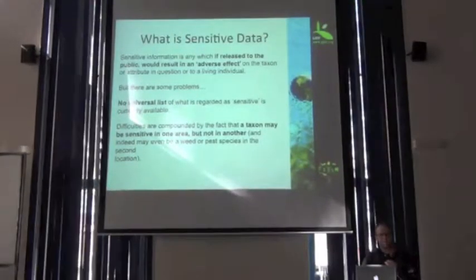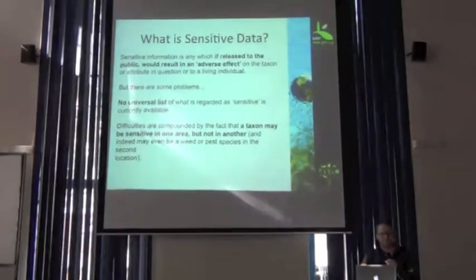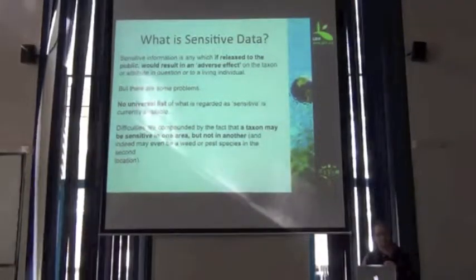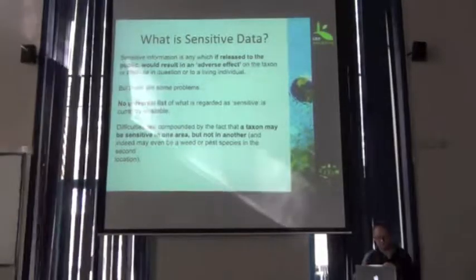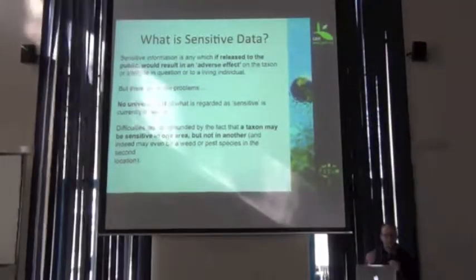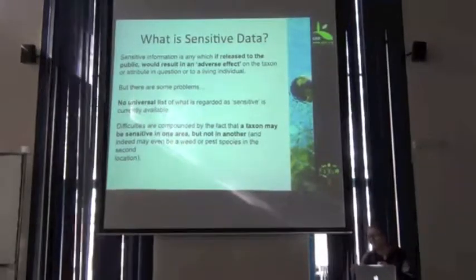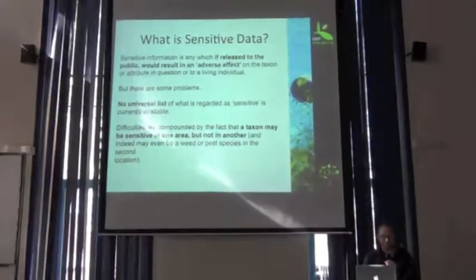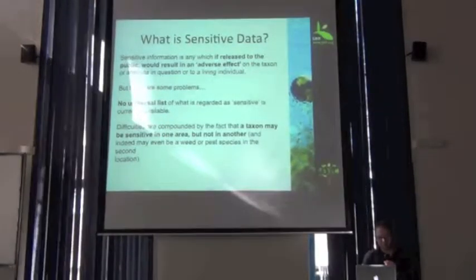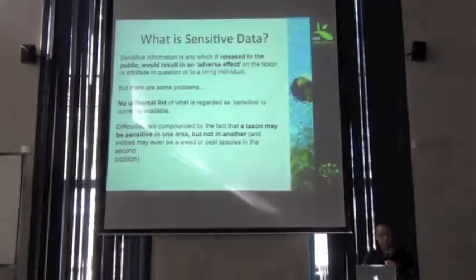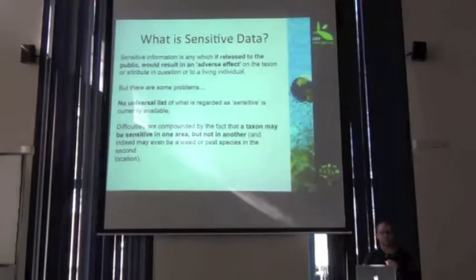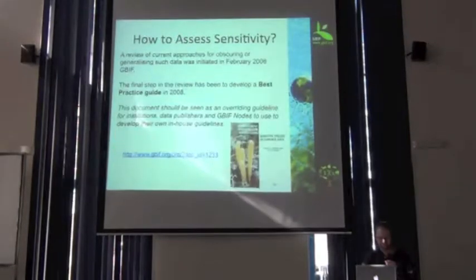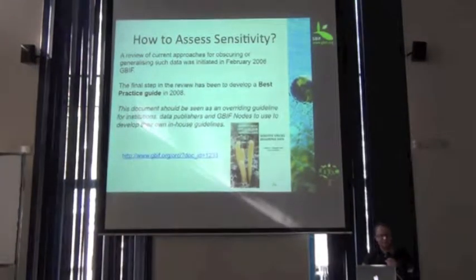There are some problems when trying to define what is sensitive data. There's no universal list where you would look and say this is sensitive or not. That's because what is sensitive in one area might not necessarily be sensitive in another. In fact, what's a weed or a pest in one species could be considered sensitive in another. So this is a pretty complicated problem — how do we assess sensitivity?